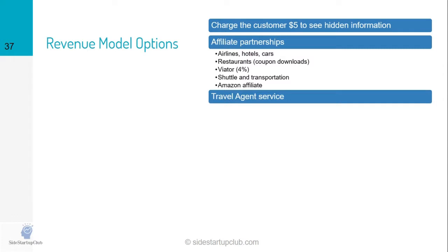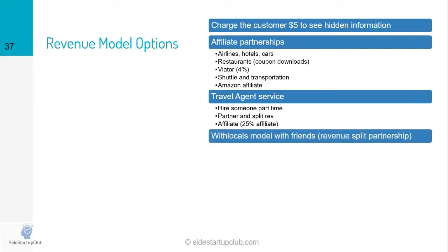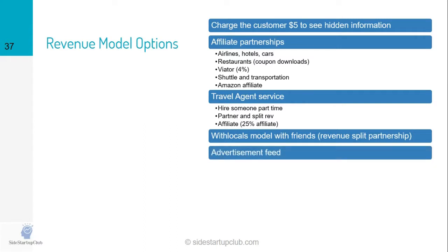We can have our own travel agent service. The customer could click a button and it could take them to our own travel agent — someone I hire part time — or to someone I partnered with where we split revenue, or to a third-party travel agency where I just get a kickback on services rendered. Here's a creative revenue stream none of the competitors are currently using: the 'with locals' model, where I connect my customer with someone in the Oaxacan community who takes them on a personalized tour, a personal dinner, or some activity for a set price, and I split that revenue with the local.